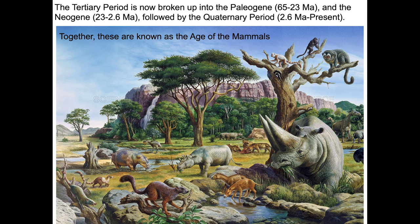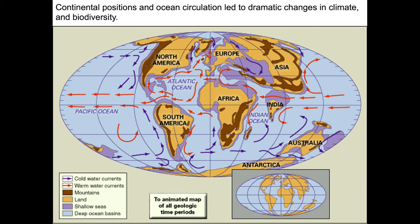We can see in this image a kind of Pixar Paleogene review of biodiversity. You can see some large mammals, some large birds, and some smaller mammals lurking in the distance. And these are early horses here.